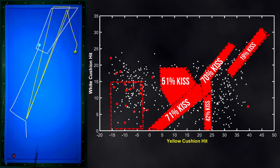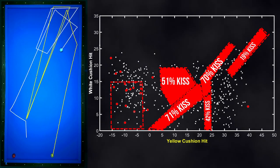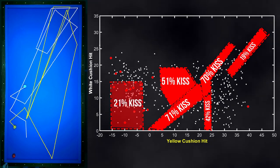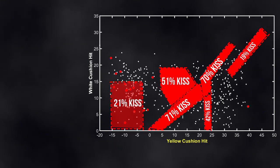The next area has a 20% kiss probability and is a relatively large area where yellow is played very thick. The kiss then comes after the third rail.